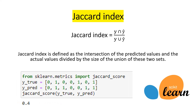Then we have the Jaccard Index, which is defined as the intersection of the predicted values and the actual values divided by the size of the union of these two sets. If the classifier does not correctly predict any value, the Jaccard Index will automatically equal zero because the intersection is zero. It is also available in scikit-learn by importing the Jaccard score.